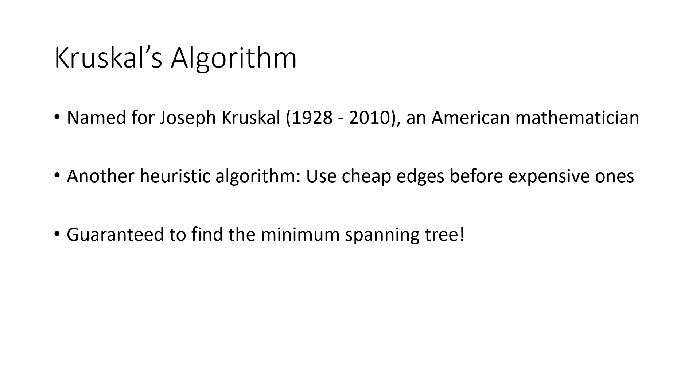The way we're going to do this is called Kruskal's algorithm. We're not going to want to try to do this with brute force method where we consider every possible collection of edges. That would take way too long. This algorithm is named for Joseph Kruskal, who's an American mathematician, and it is another heuristic algorithm. The idea is, let's use those cheap edges before we use the expensive ones. And the nice thing about this algorithm is unlike the algorithms that we've talked about before, this one is actually guaranteed to find that minimum spanning tree. So that's pretty nice.